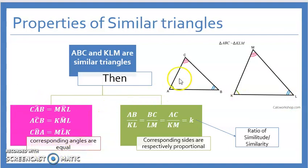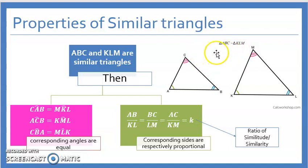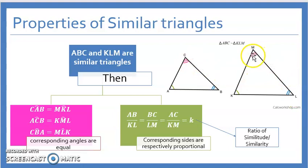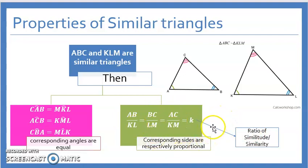The second property is that the sides of the first triangle are respectively proportional to the sides of the other triangle. Note that they don't need to be equal — they might be equal, but not necessarily. So AB over KL should equal BC over LM, which should equal AC over KM. This equals a constant number K, which is called the ratio of similitude, also called the ratio of similarity.